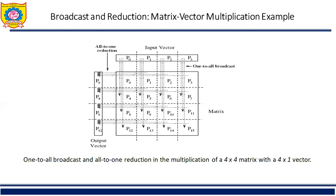After the broadcast, each process multiplies its matrix element with the result of the broadcast. Then each row of processes needs to add its results to generate the corresponding element of the product vector. This is accomplished by performing all to one reduction on each row of the process mesh, with the first process of each row as the destination of the reduction operation.